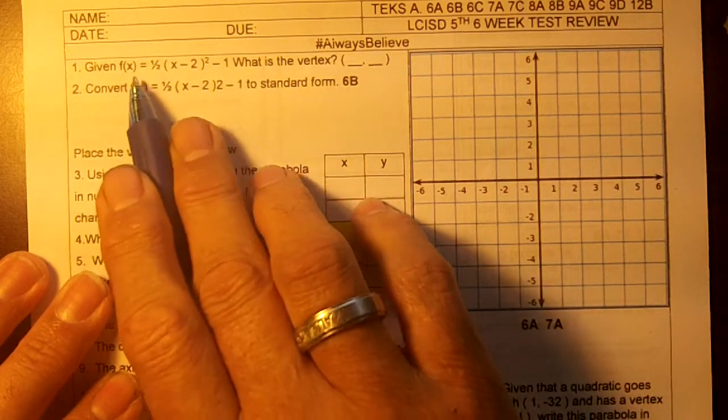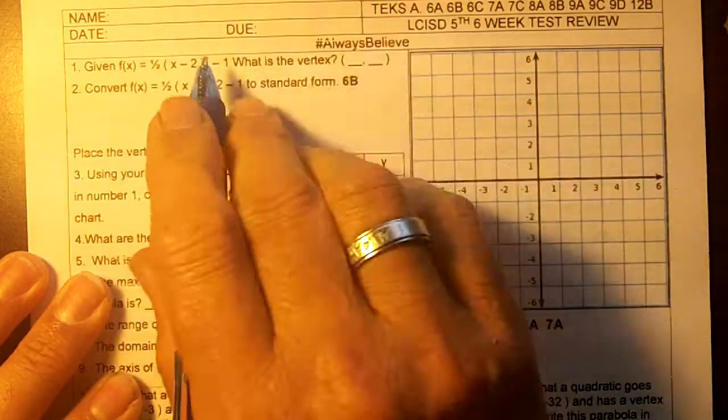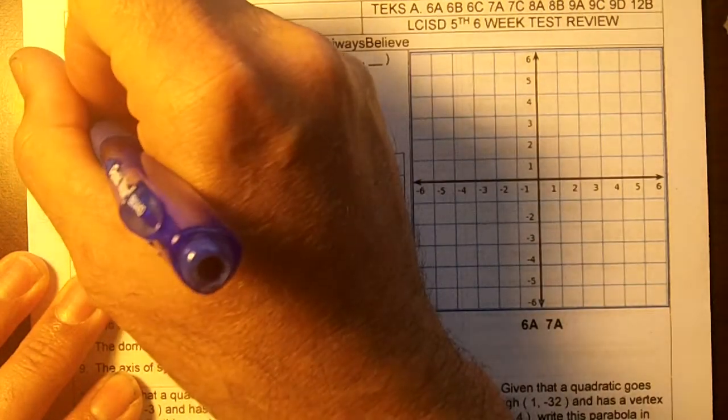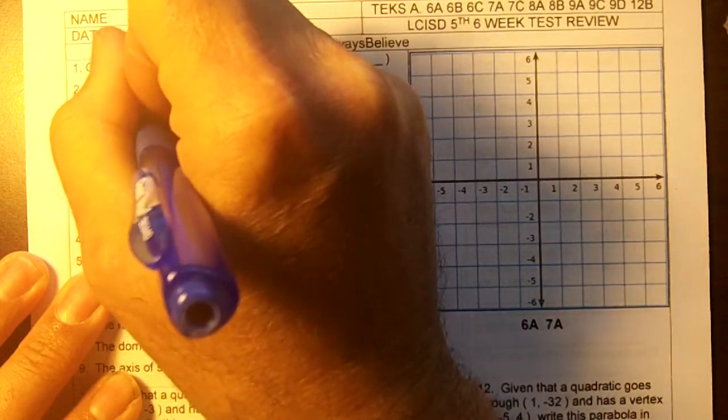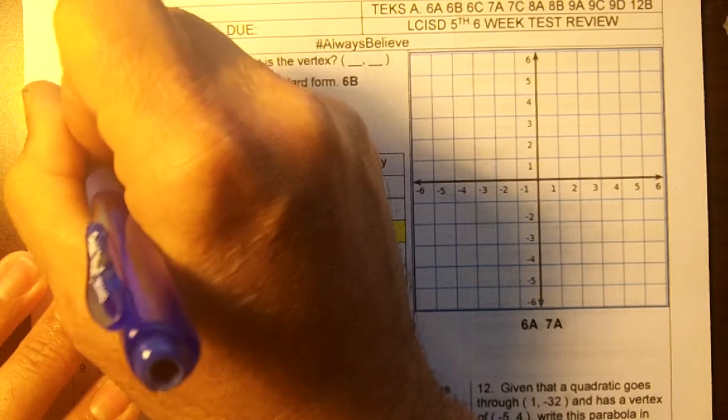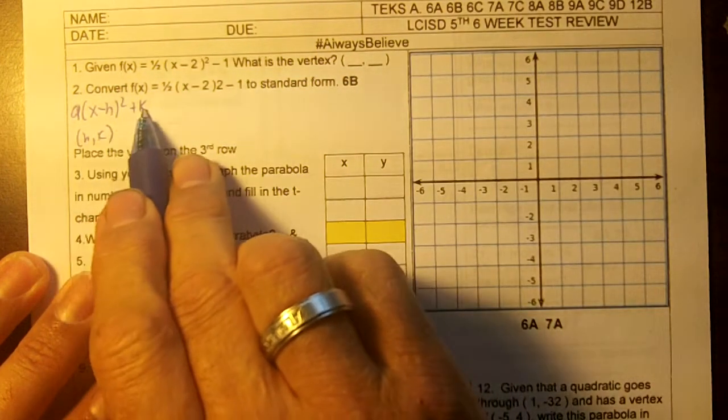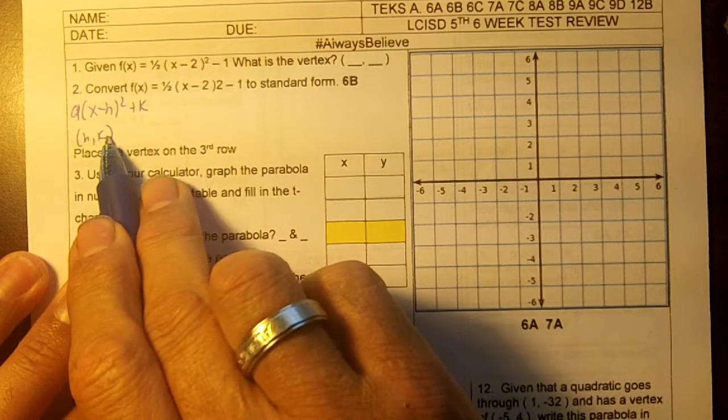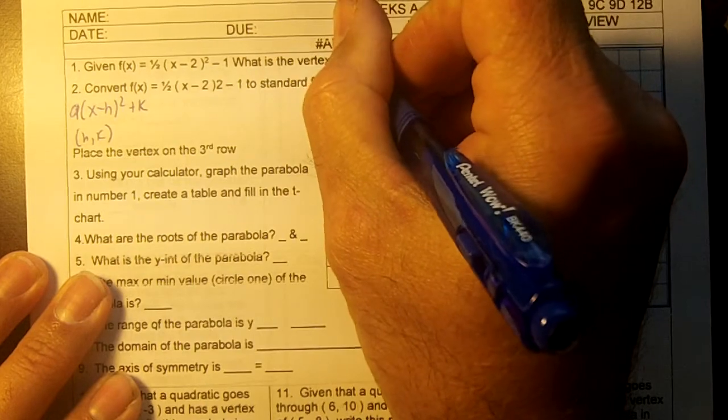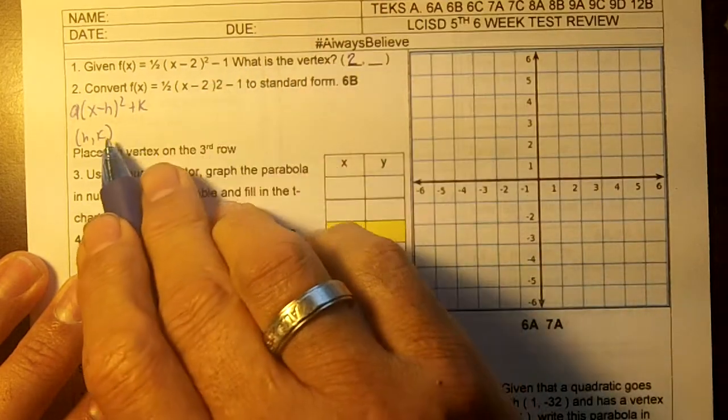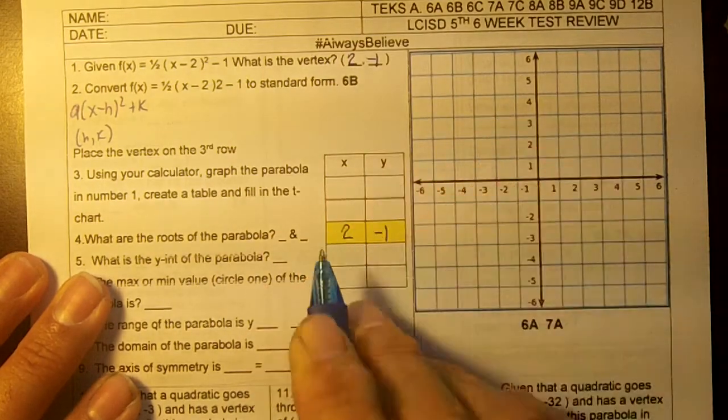We're given that this is our equation, what's the vertex? Remember in vertex form, it's a parentheses x minus h squared plus k and h comma k is our vertex. So the opposite of h is our h, and the k is going to be our y, so h comma k. The opposite of negative two is a positive two, and the negative one is going to be our y. So two negative one would be our vertex.